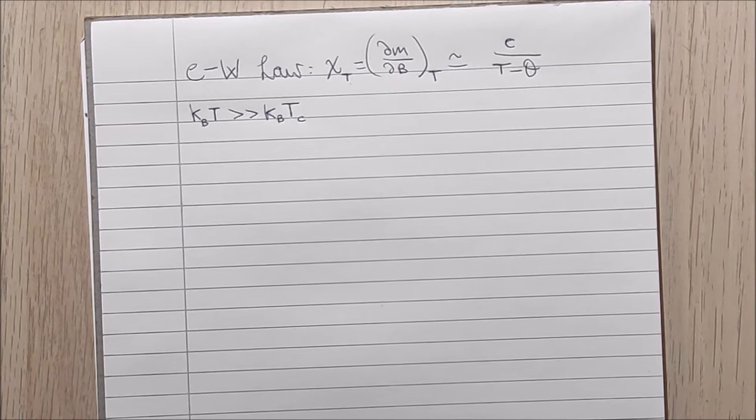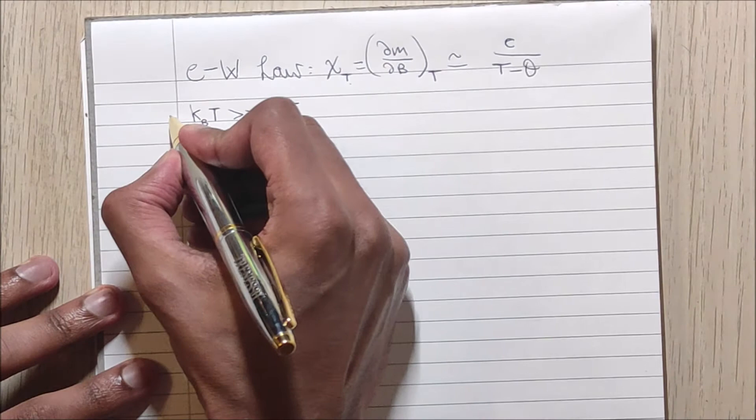Recall from my previous video that this is the temperature which separates the boundary between the ferromagnetic and paramagnetic phases of the system. By taking the temperature to be greater than this value, we are in the paramagnetic phase.